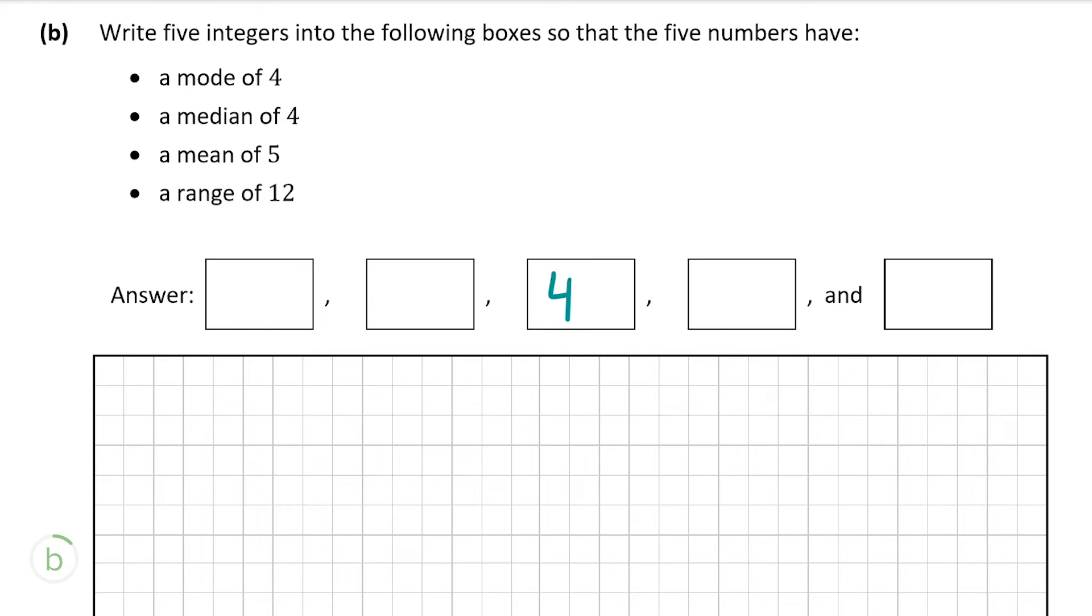It's saying also that the mode will be 4 as well so that means we're going to have to have more 4s than any other number. So we know it has a mode of 4 so let's just put in another 4 here. And then we know it has a range of 12 so there's 12 between the largest value and the smallest value, so we can start with 1 and to have a range of 12 then the largest value will be 13.